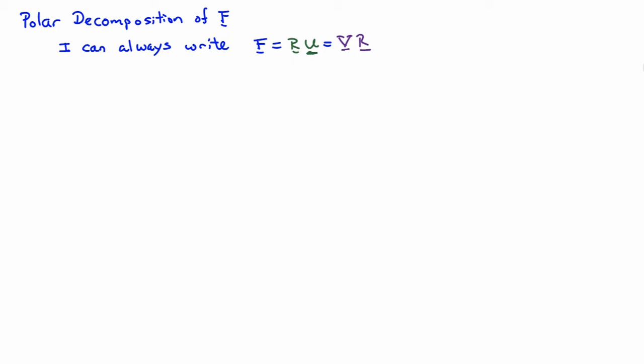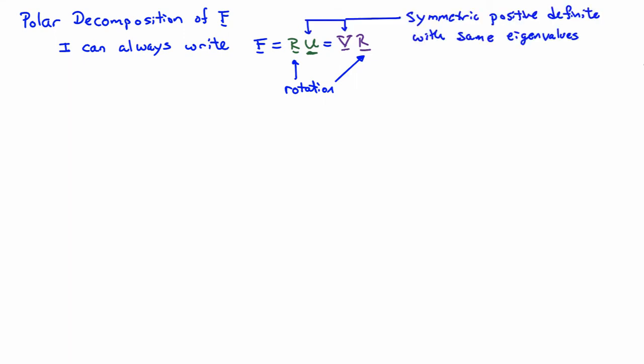These tensors R, U, and V have very particular properties. The tensor R is a rotation, so R transpose R is the identity. Also, the determinant of R will be equal to plus one. The tensors U and V happen to be symmetric and positive definite, and they happen to share the exact same eigenvalues. They have different eigenvectors, but they have the same eigenvalues.